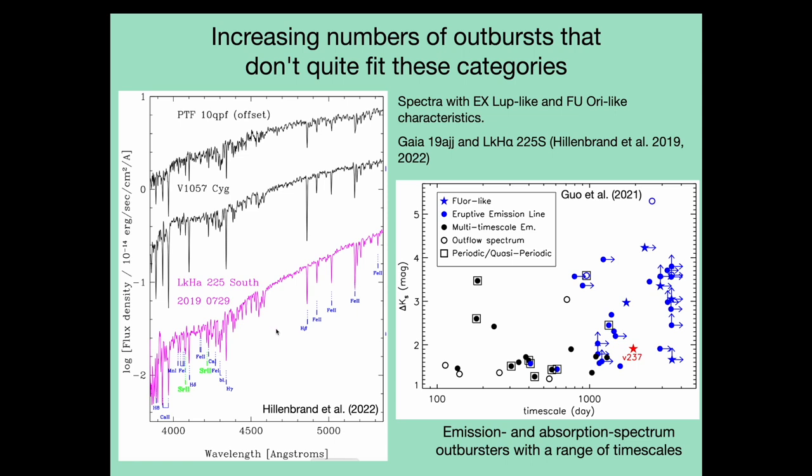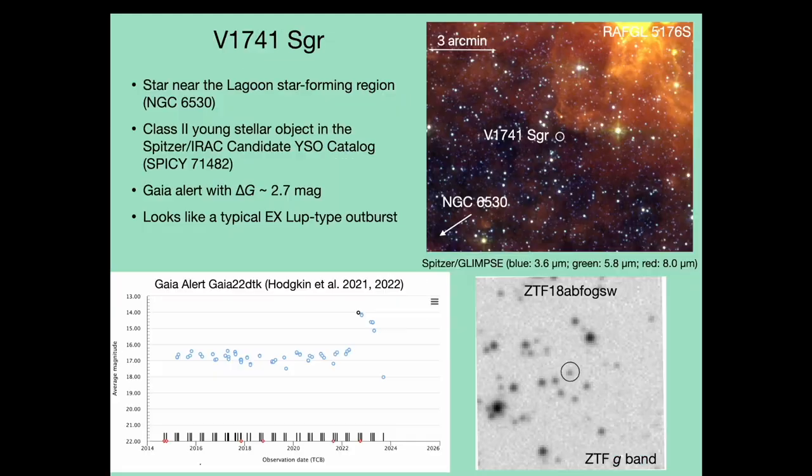In addition, near-infrared surveys like VISTA Variables in the Via Lactea have found both FU Ori-like outbursts and emission-line outbursts with similar timescales.